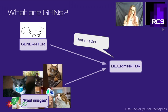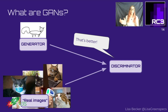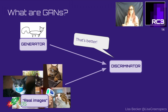The discriminator learns not only through the generator's output but also by getting real images of cats. So the discriminator receives fake images from the generator, but also real images from labeled input data. Every time the discriminator sees a picture it makes a guess: yes or no, is this a cat?